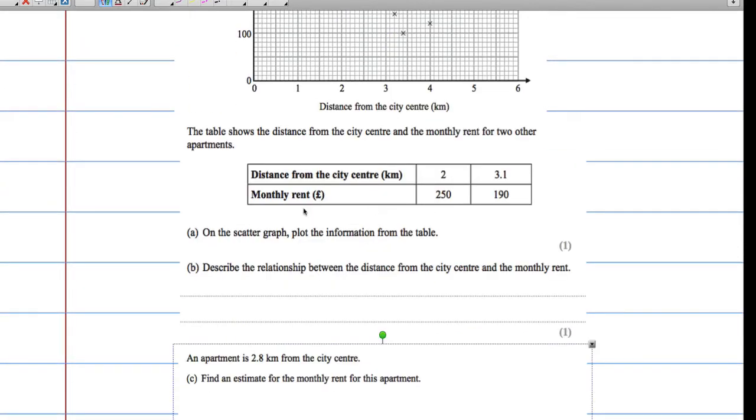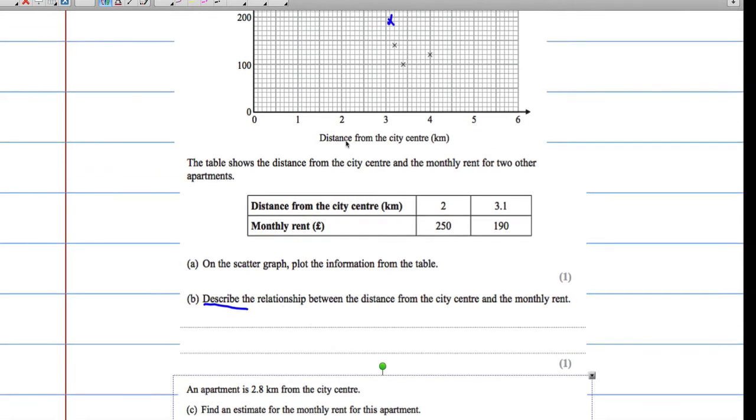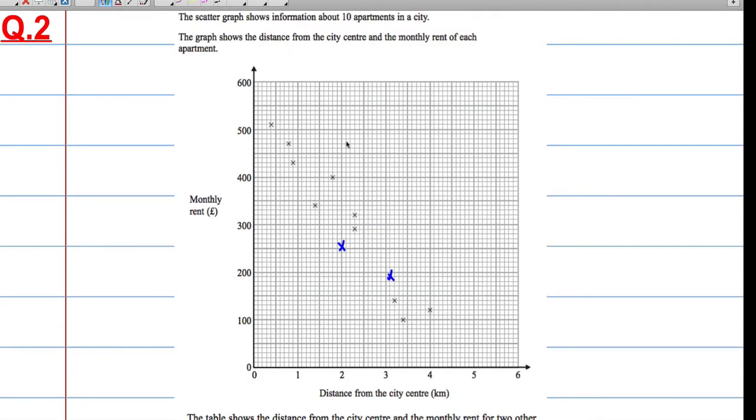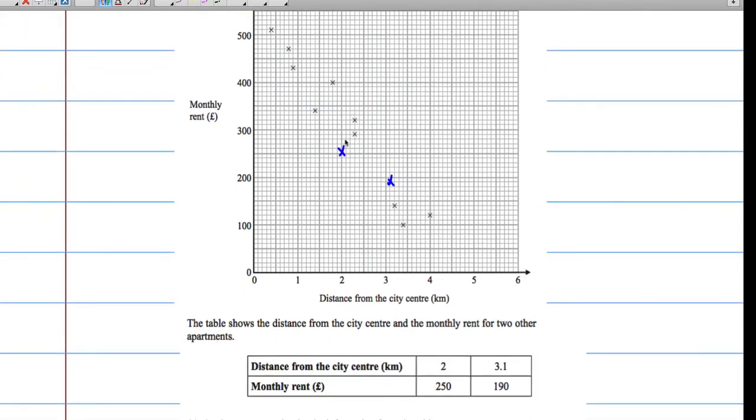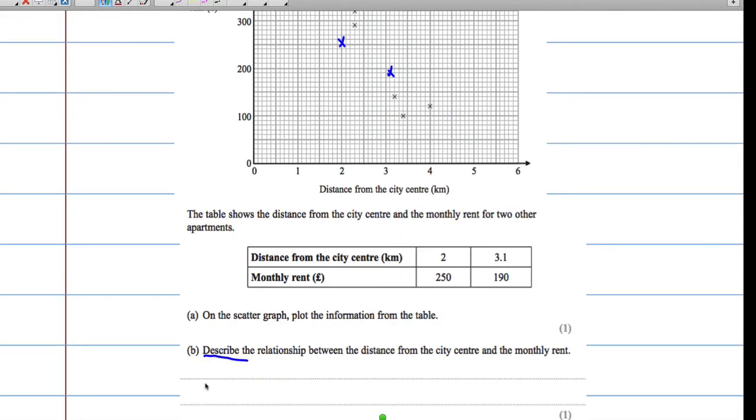Describe the relationship between the distance from the city center and the monthly rent. The key thing here is it says describe. It didn't ask about the type of correlation. We can see there that it is a negative correlation. We can write that down: negative correlation.